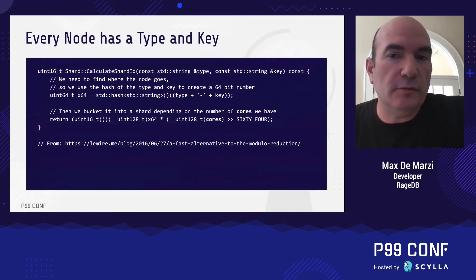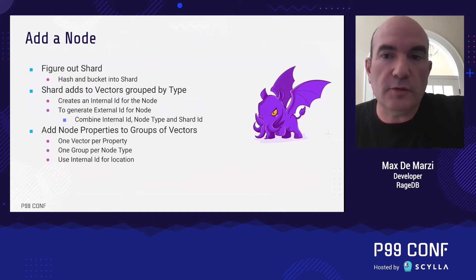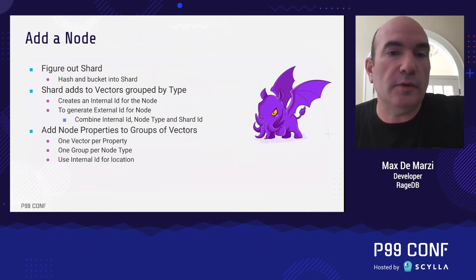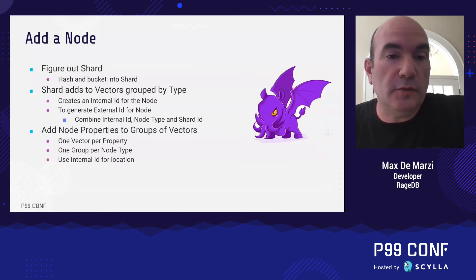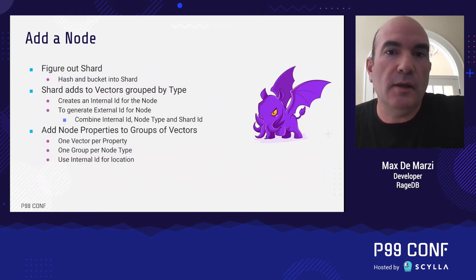To add a node, we do the hashing, figure out which shard it belongs to, and pass it onto that shard. That shard adds it to a vector depending on its type, giving it an internal node ID — so if it's the first user node, it goes to position one in that vector. We then use that internal ID plus the type to generate external IDs, which the rest of the graph uses. Properties are added by their internal IDs, so you look at the property vector at that array position directly — no hashing needed, you go exactly to the spot you need.